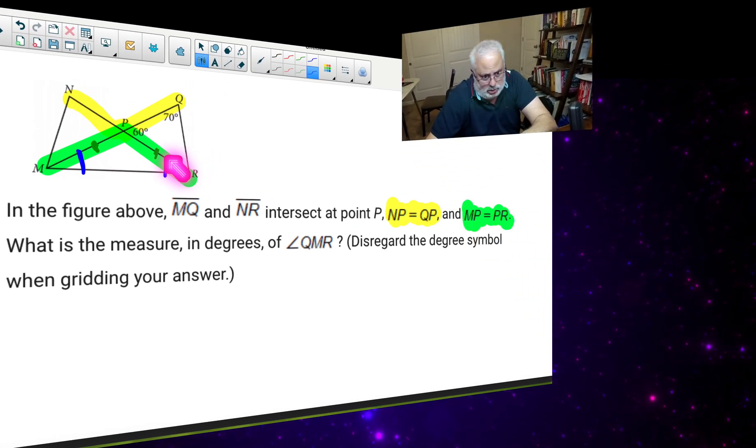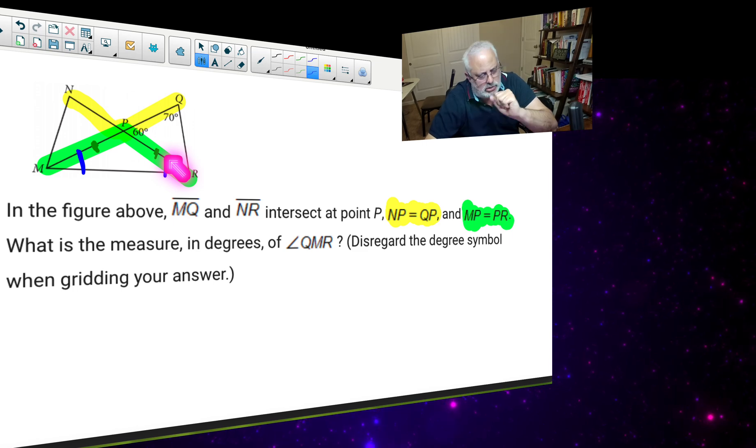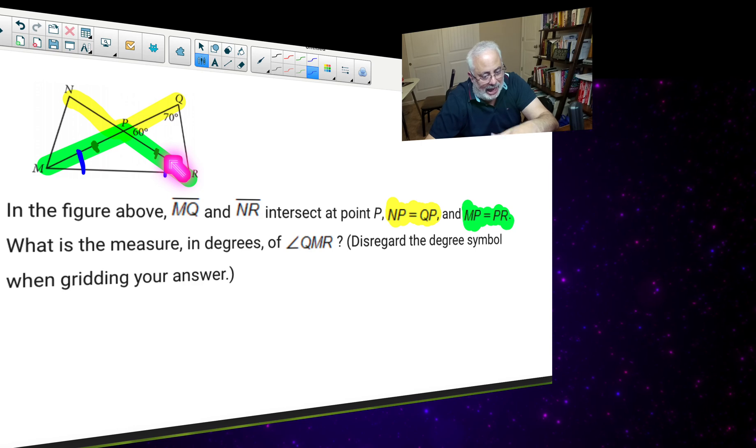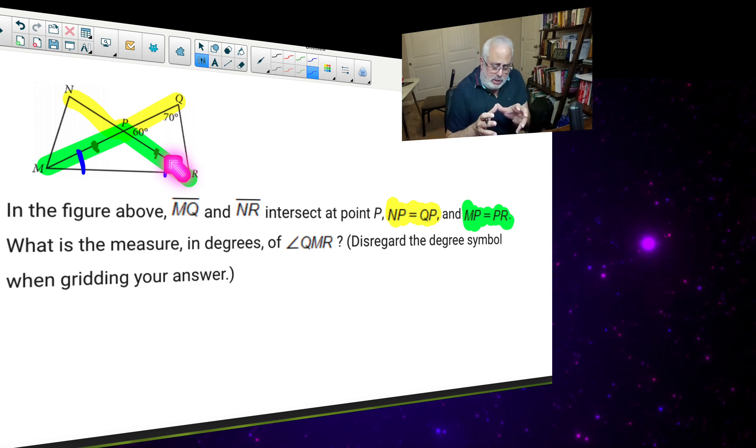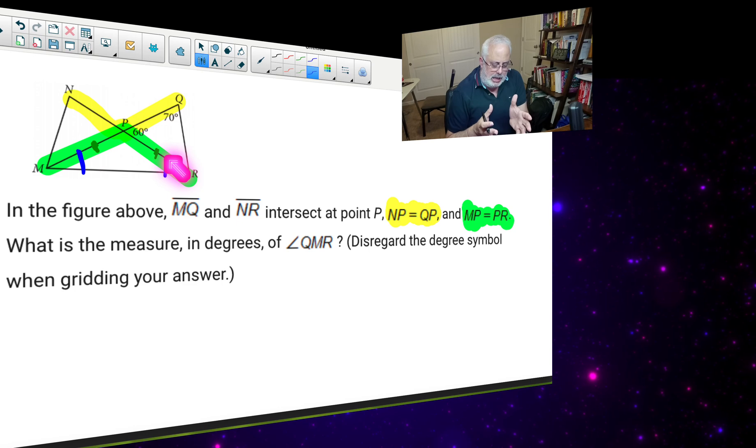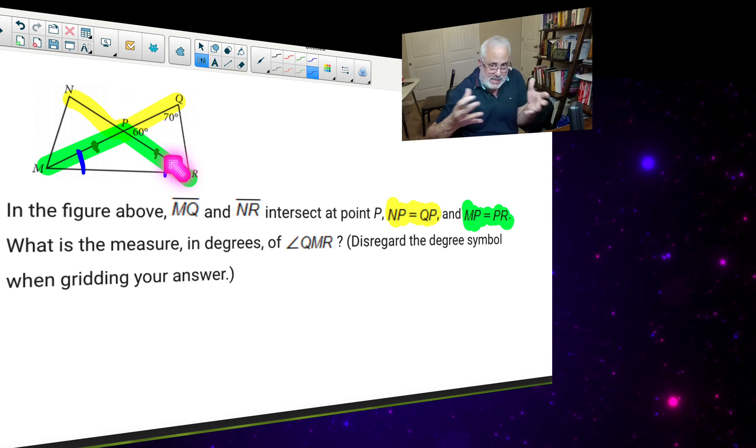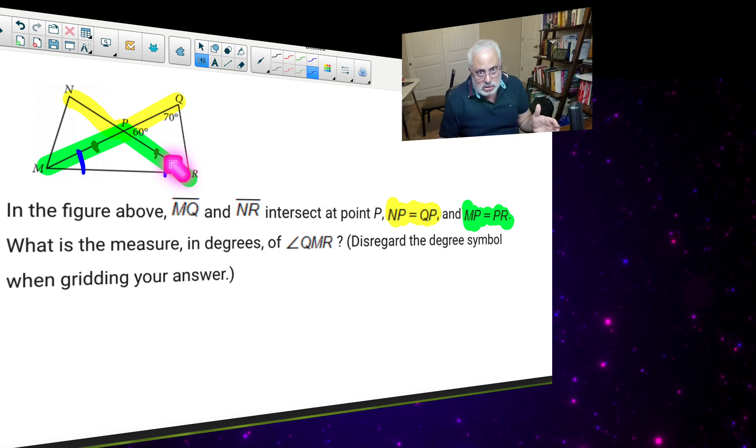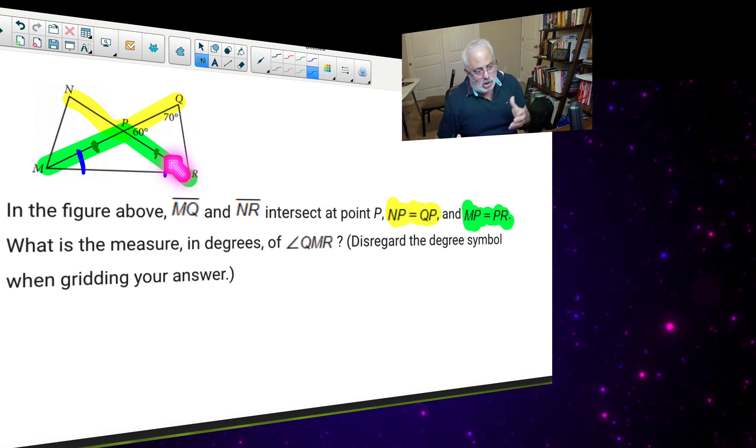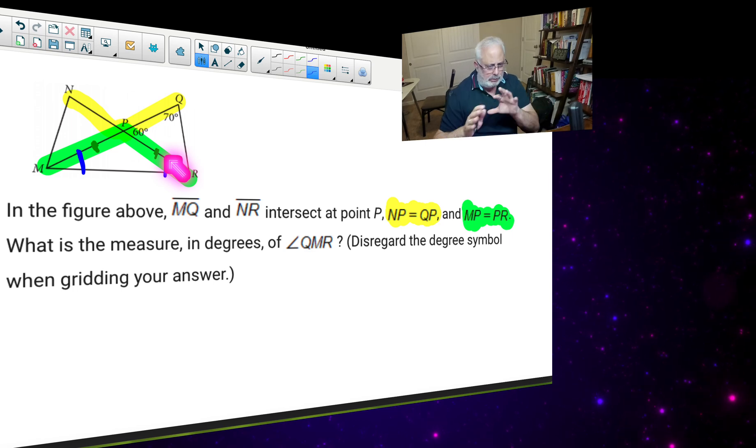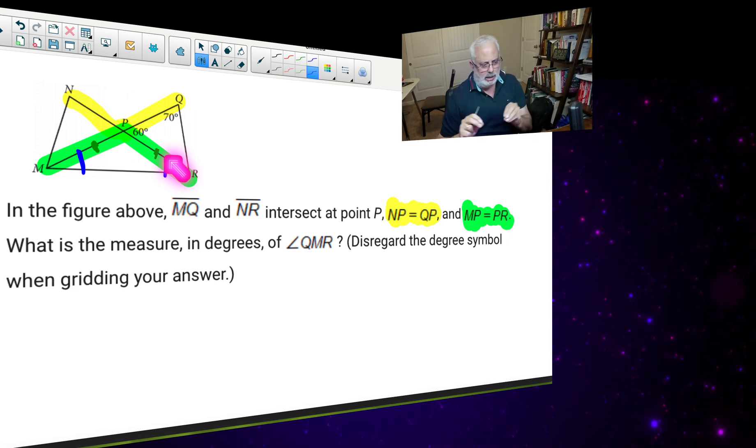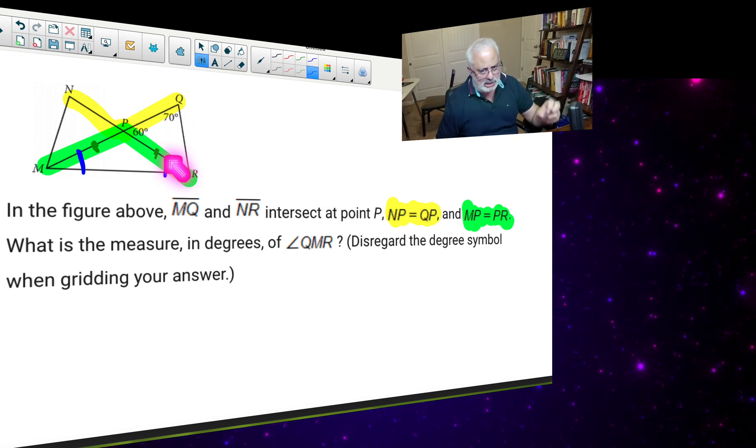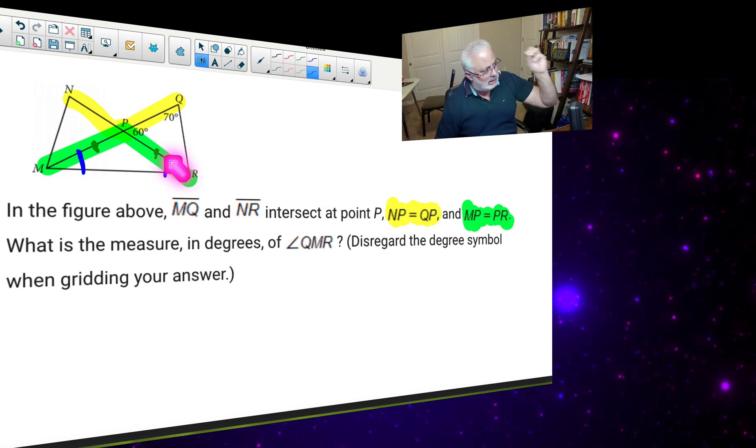Because we have a distraction, maybe yes, maybe no, I don't know, the yellow information. And we have the explicit information, MP equals PR, but the explicit information contains an implicit information, which is the triangle NPR is isosceles, and the angles opposite to the equal sides are the same. So look at the players, and I am using the color code in order to help my students to understand how to identify explicit, implicit, hidden features.